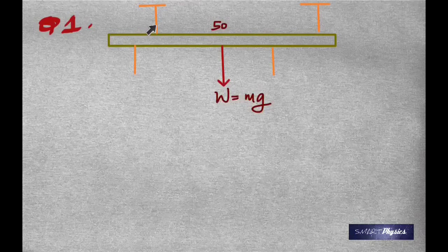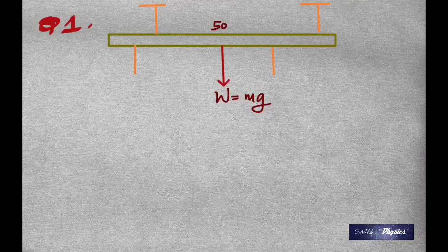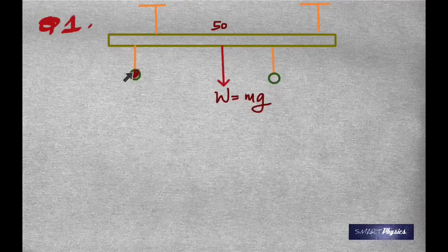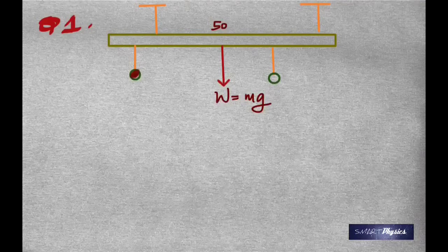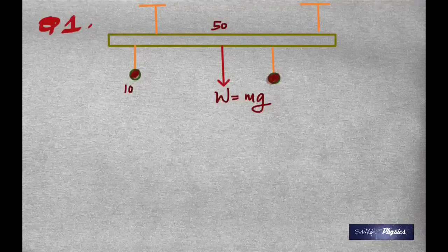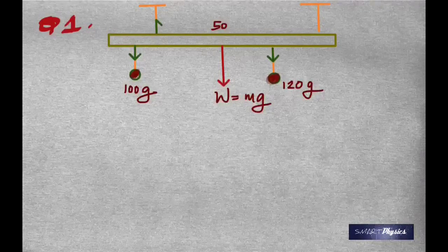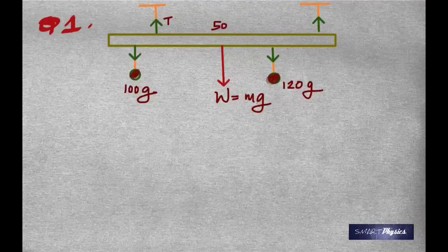The meter stick is suspended by two strings — one at 20 centimeters and the other at 90 centimeters — attached to a rigid support at the top, maybe the ceiling or some very strong support that does not move. There are two objects suspended: one at the 10 centimeter mark, which is a 100-gram mass, and the other at the 70 centimeter mark, which is a 120-gram mass.